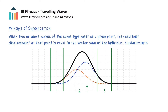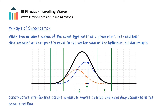For example, at this point here, the orange pulse has an upward displacement of one grid square, and the blue pulse has an upward displacement of three grid squares, giving a resultant pulse of four grid squares from the principle of superposition. We could do the same analysis for any point along the interaction. In particular, this is an example of constructive interference, which occurs at any point where the two overlapping waves have a displacement in the same direction. Constructive interference results in a wave with a larger amplitude than any of the individual waves.